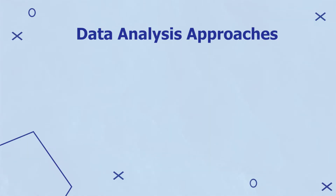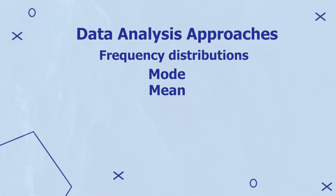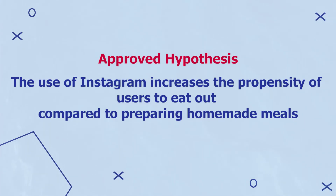Having collected data related to the independent and dependent variables, we are now ready to move to the seventh step of research, which is analyzing data. Data analysis helps to make sense of the data collected and to either approve or disapprove our hypothesis. Different approaches can be utilized in data analysis, including frequency distribution, mode, mean, median, and dispersion in distribution. We can also use other sophisticated statistical approaches. In our example, if we found that higher frequency of Instagram use is directly related to the increased probability of users to eat out, we could approve our hypothesis that the use of Instagram increases the propensity of users to eat out compared to preparing homemade meals.